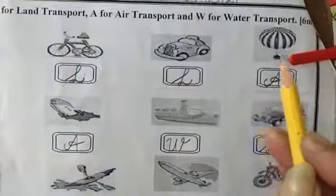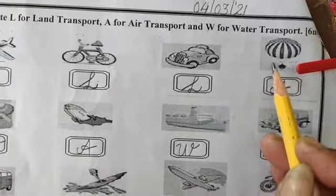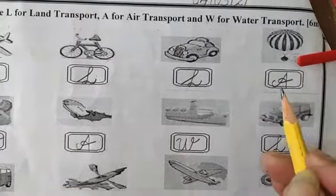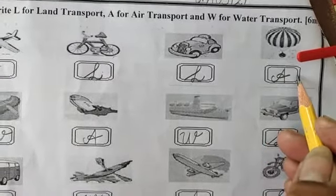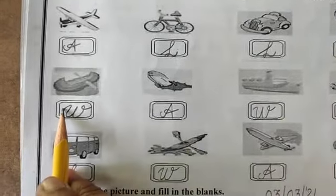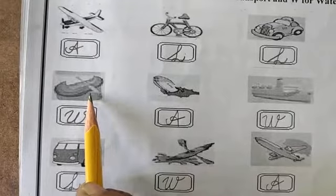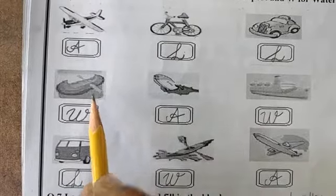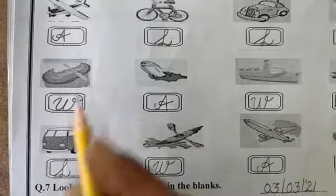This is Air Balloon. And Air Balloon can fly in the air. So we have to write here A for Air Transport. Next, this is Boat. And Boat can travel in Water. So we have to write here W for Water Transport.